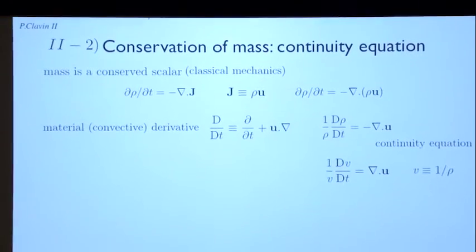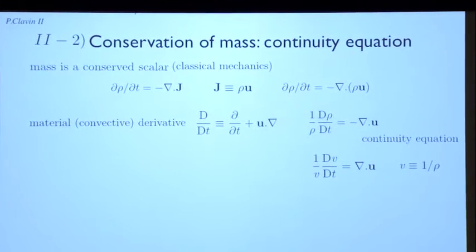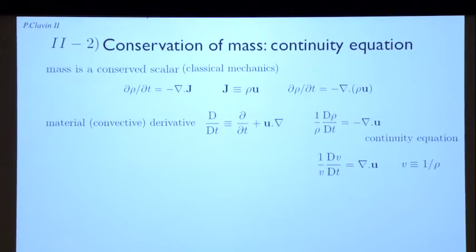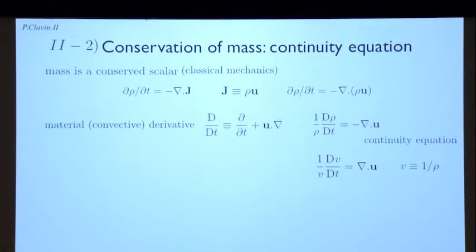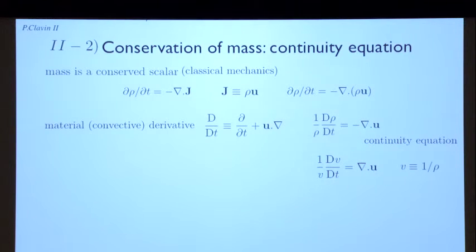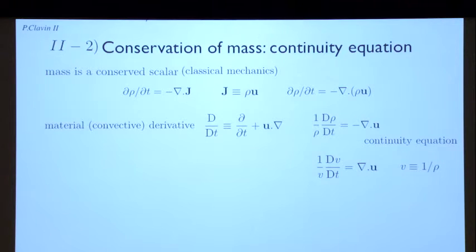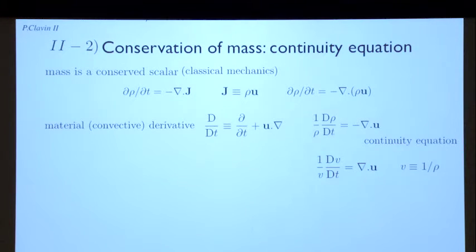Sometimes it is more useful to introduce the specific volume, which is the volume per unit mass — the inverse of the mass density — and you have the same relation except the sign is changed. The divergence of the flow velocity is an expansion or compression rate: it is the rate of change of the volume per unit time.